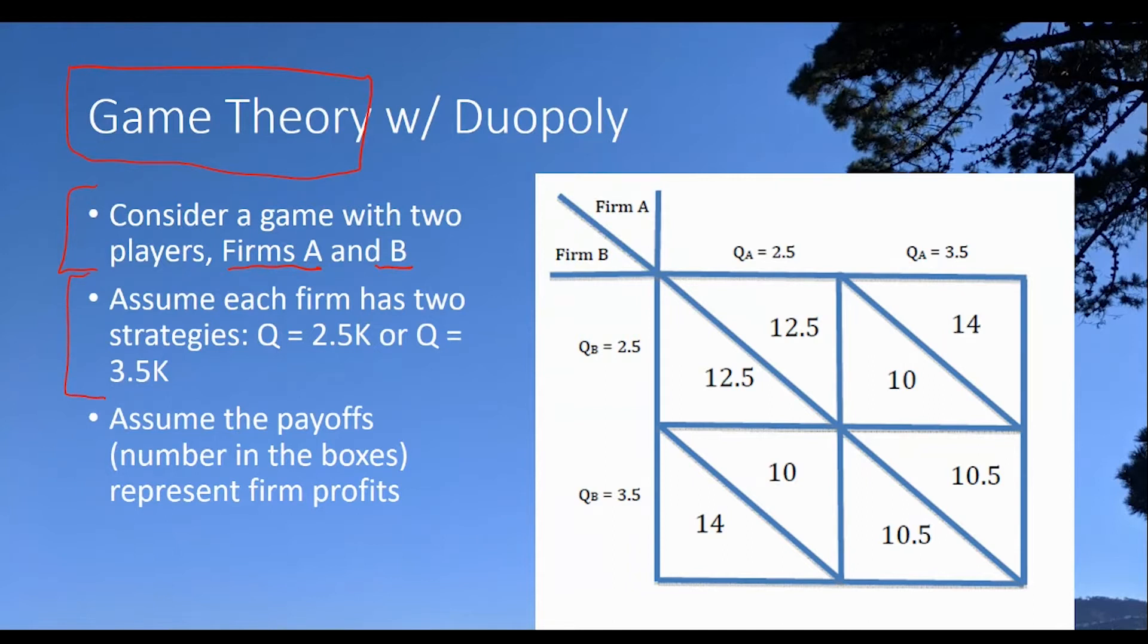In actuality, the firms have many strategies because they can choose any output level they want from zero to a very high level. But we're going to simplify the story here to just two discrete choices. The firm can either choose a quantity of 2.5 or they can choose a quantity of 3.5. All the essential points are contained within these two simple choices.